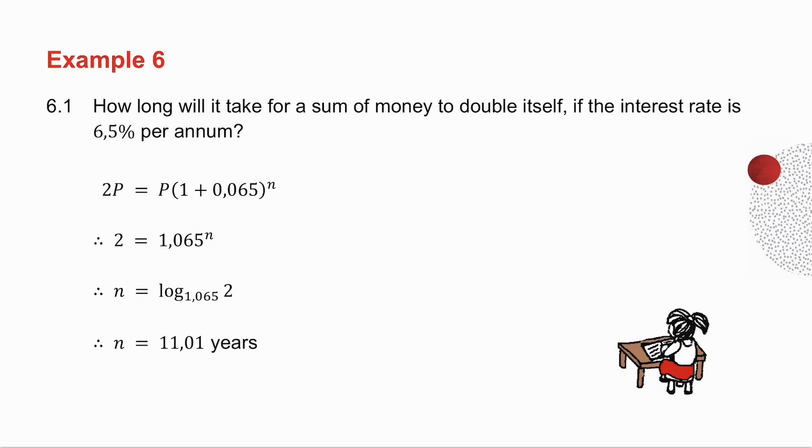In 6.1, I ask you how long it will take for a sum of money to double itself. So I let the initial amount be p, final amount is 2p. Remember that 2p divided by p is 2.